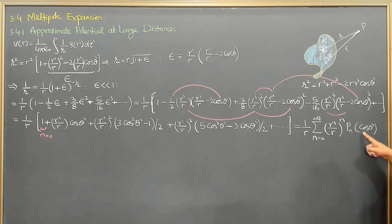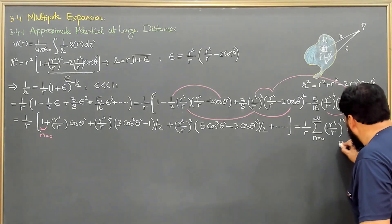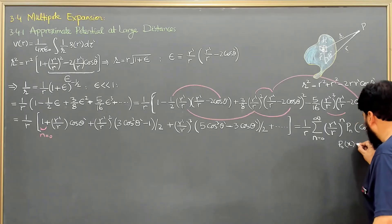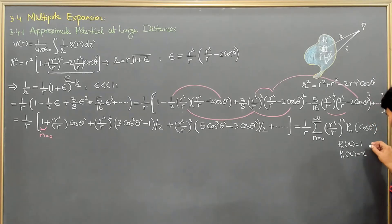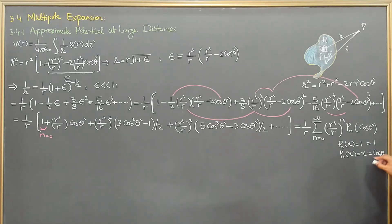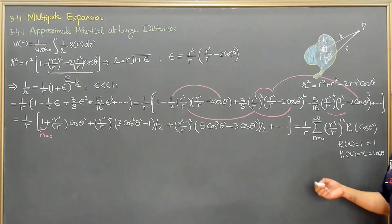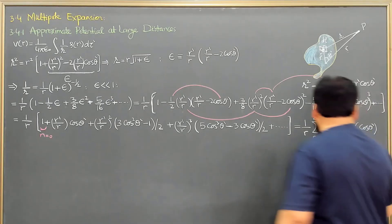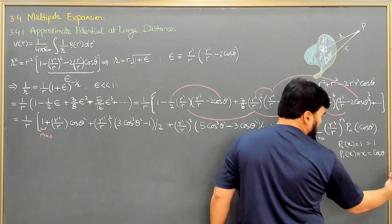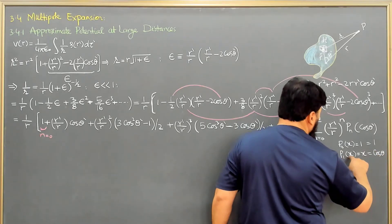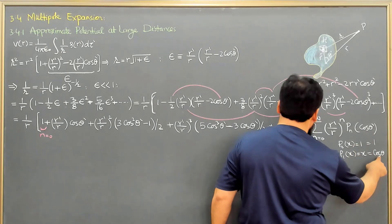Now for the P_1 term: P_1 of cos theta. Recall that P_0(x) equals 1 and P_1(x) equals x. In cos theta form, P_0 is 1, and since x equals cos theta for a unit circle (where r equals 1), P_1 of cos theta equals cos theta.